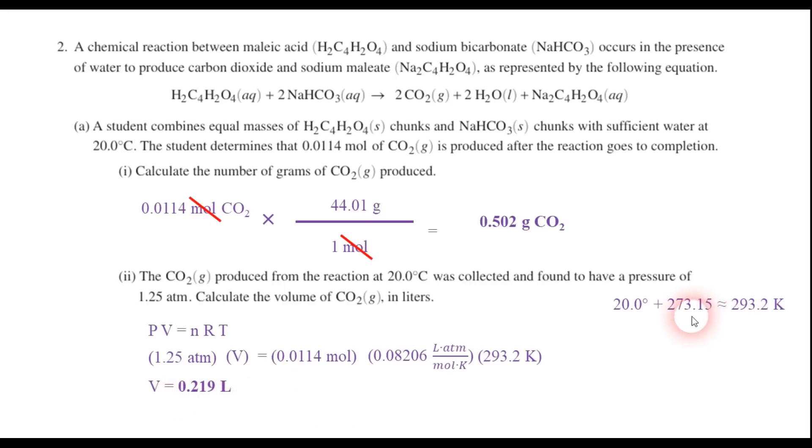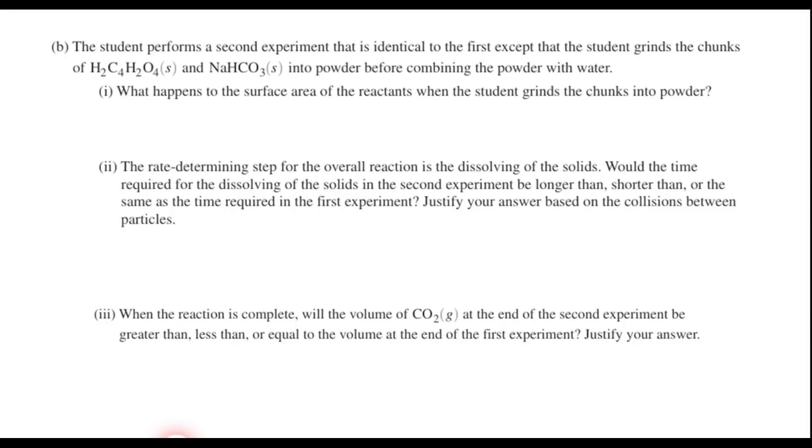Now, just in case you're wondering, if you just added 273 instead of 273.15, that's perfectly fine as well. I think you'll get the same answer. Now, as we move on to Part B, it says the student performs a second experiment that is identical to the first, except that the student grinds the chunks of maleic acid and sodium bicarbonate into powder before combining the powder with the water. And so Question 1 says, what happens to the surface area of the reactants when the student grinds the chunks into powder? Well, when you grind something into powder, you have smaller particles, so we have a greater surface area. So we'd say that the surface area of the reactants increases when they're ground into powder.